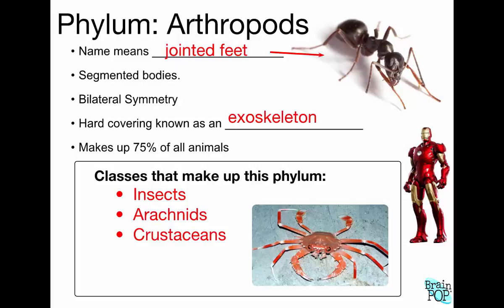Insects — things with six legs — include butterflies, flies, grasshoppers, bees, and beetles. Arachnids include spiders, scorpions, and ticks. Crustaceans — things like crabs, lobsters, and shrimp — are all crustaceans. There are also two more groups: centipedes and millipedes. They're all arthropods — a huge group of animals.